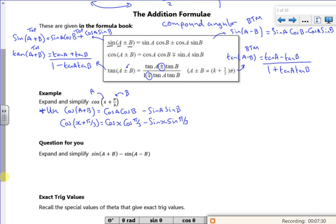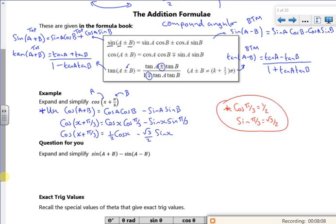Now cos of pi by 3 is a half. So that would be a half of cos x. Sine of pi by 3, according to the completed pack, is root 3 over 2. So that would be minus root 3 over 2 sin x. So let's put it on the side here. So that's where they come from, the half and the root 3 over 2.